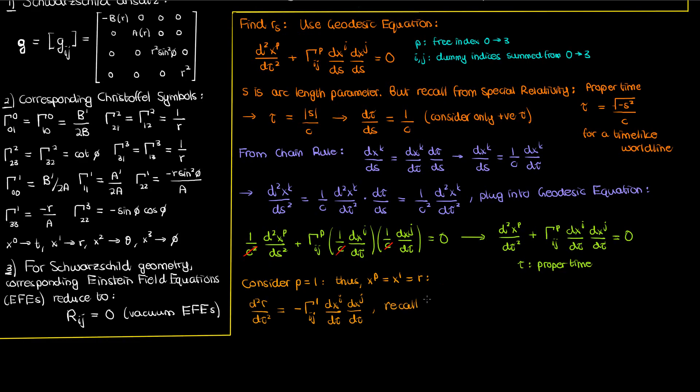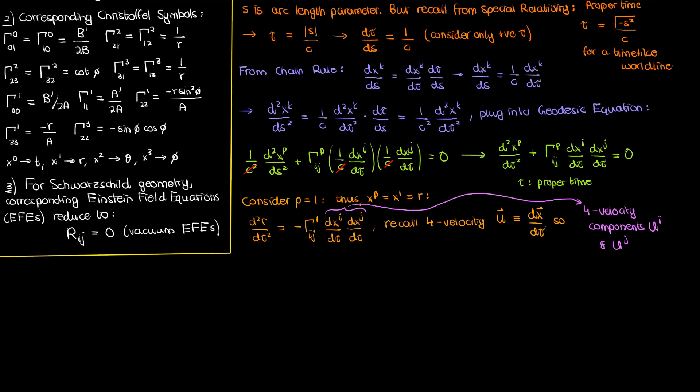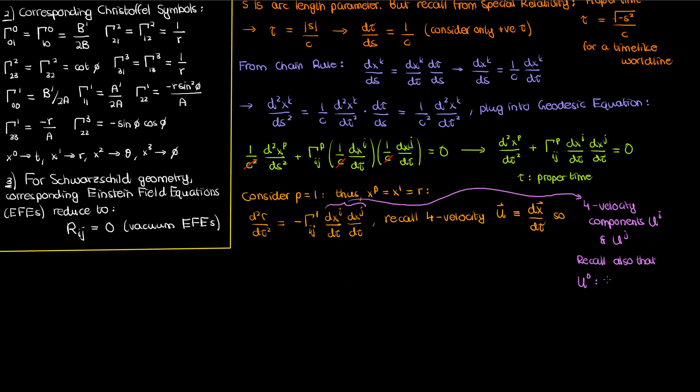Let's now recall something else from special relativity, the 4-velocity. By definition, the 4-velocity U is the proper time derivative of the 4-displacement X. So these tau derivatives of X^I and X^J are really just the 4-velocity components of our test particles, so U^I and U^J. You'll recall that the U^0 component, the time component of the 4-velocity, involves the speed of light C, and the spatial components of U involve the spatial velocity of the particle V, so the U^1, U^2, and U^3.